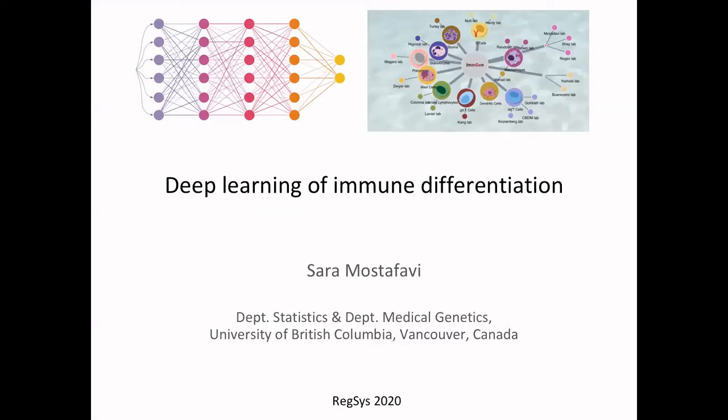It's my pleasure to be here and tell you some of our recent work on using deep neural networks in combination with a large amount of ATAC-seq data across the immune system in order to understand processes related to differentiation as they're encoded in the genome itself. What I'm really excited about is this opportunity to open up black box complex models like neural networks in order to actually understand the biology that they've learned and make accurate inferences for complex problems.